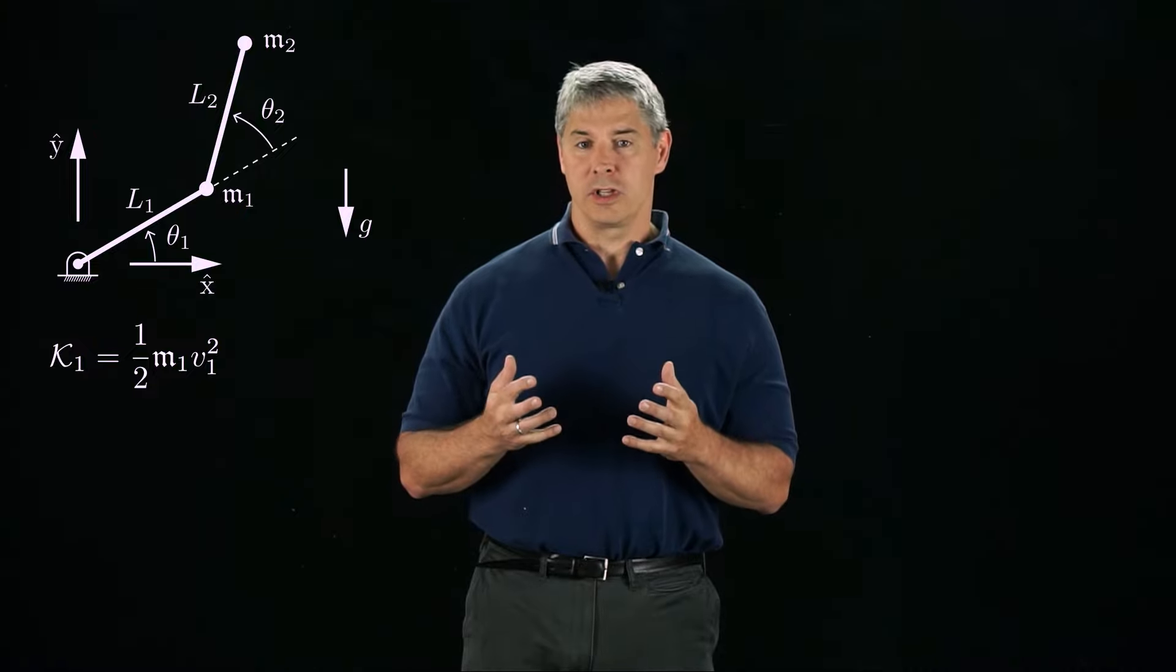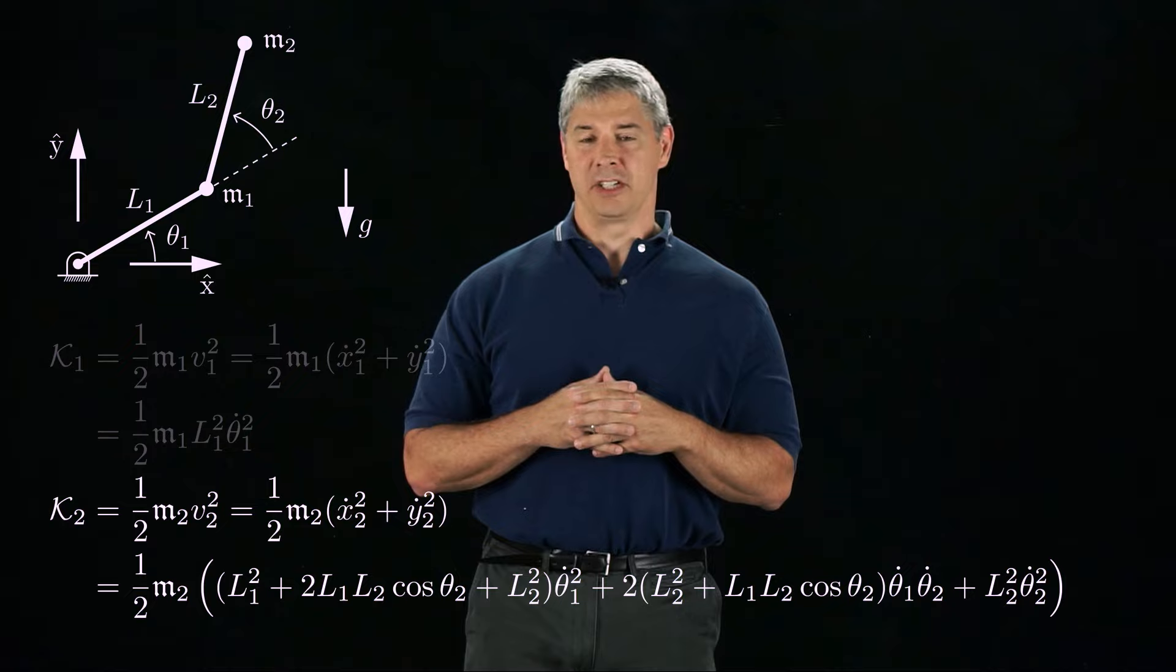With this information, we can calculate the kinetic energy of link 1 as one-half M₁V₁ squared, where V₁ squared is just ẋ₁ squared plus ẏ₁ squared. Applying our earlier derivation, the kinetic energy simplifies to one-half M₁L₁² θ̇₁ squared. We can similarly calculate the kinetic energy of link 2.